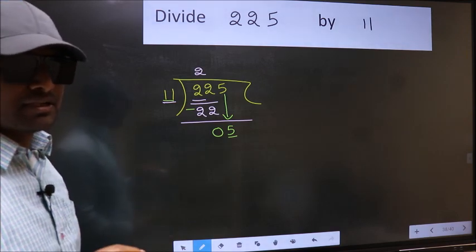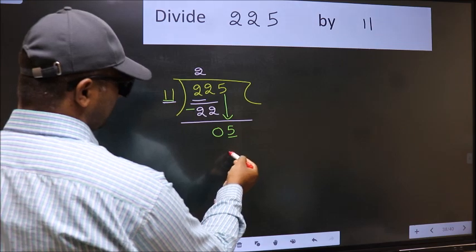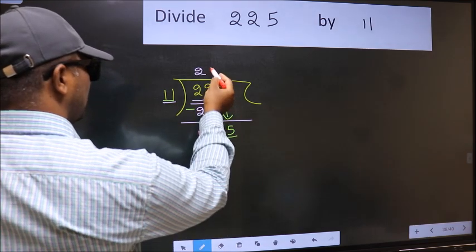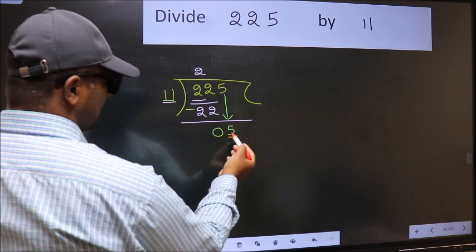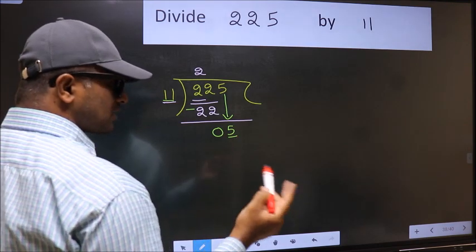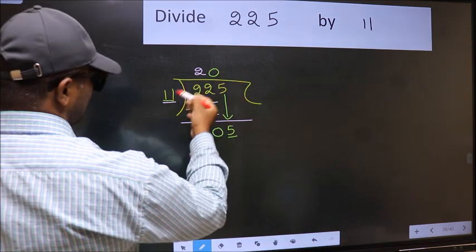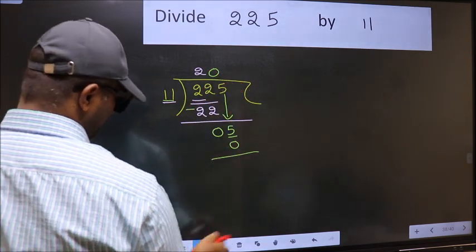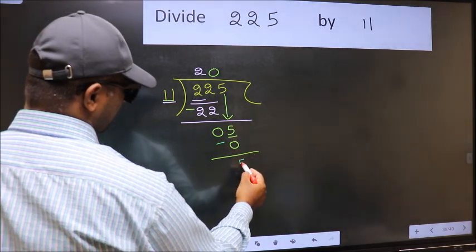Instead, what you should think of doing is, which number should we take here? If I take 1, we will get 11, but 11 is larger than 5. So what we should do is we should take 0. So 11 into 0 is 0. Now you should subtract. 5 minus 0 is 5.